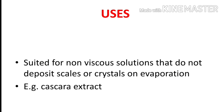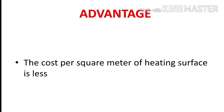Horizontal tube evaporator is mainly used for the evaporation of non-viscous solutions, because non-viscous solutions do not form scale or deposit on the evaporating pan. For example, it is used for cascara extract. The main advantage is that the cost per square meter of heating surface is less compared to other evaporators. These are the important things regarding horizontal tube evaporator.